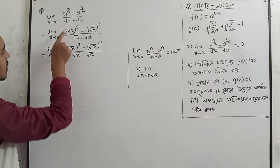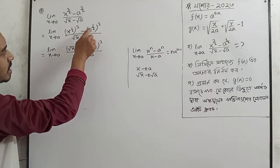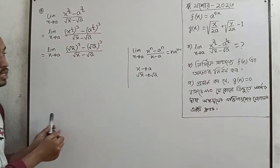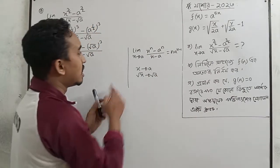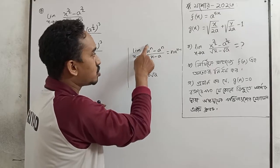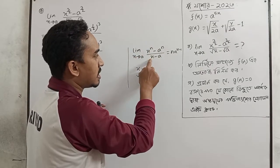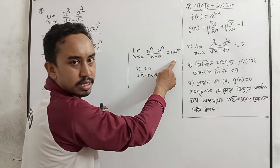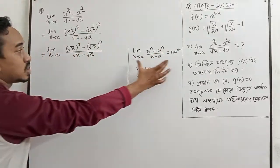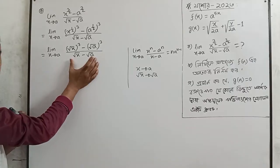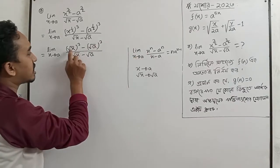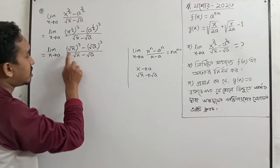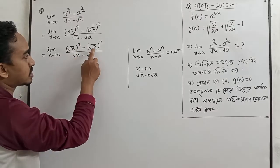We have to write a to the power half. Now we are going to change. We use the standard result: limit x tends to a of x to the power n minus a to the power n divided by x minus a equals n times a to the power n minus 1. The condition involves x to the power n, a to the power n, and n. See: x root x into a root x.